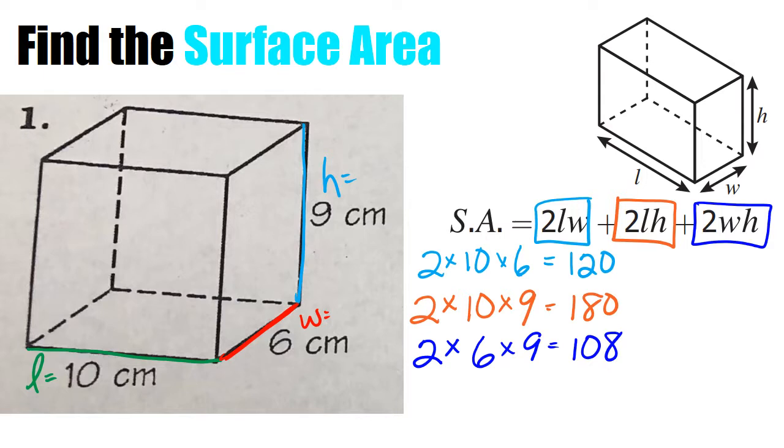And my last and final step, what I'm going to do is I'm going to add those three totals together. So I'm going to do 120 plus 180 should give you 300 plus 108 gives you a surface area of 408 centimeters squared.